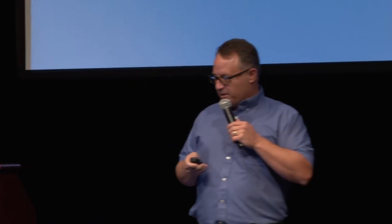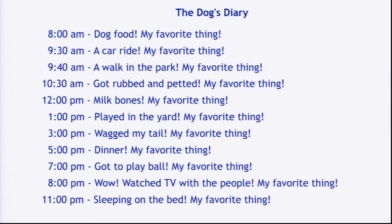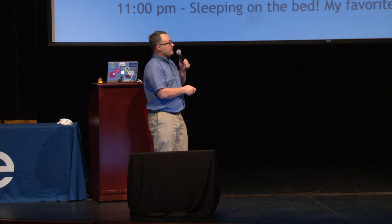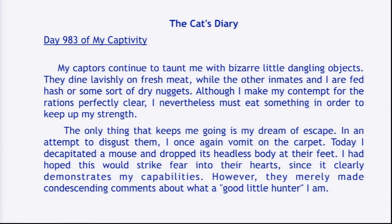We're going to do another one — I need you to read what's on the screen, then we're going to do another group activity. This one's called Dogs and Cats. So this is the dog's diary — look for patterns, notice the structure of the way it's written. You can just Google 'dog and cat diary' and get this yourself. Now here's the cat's version.